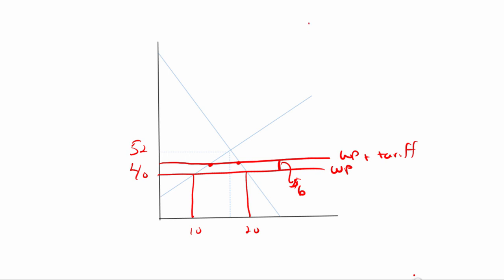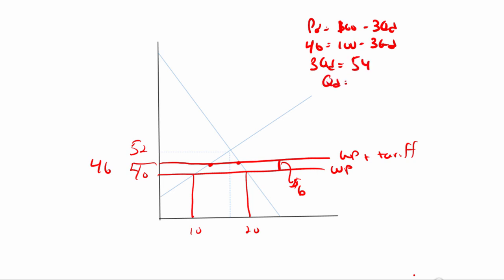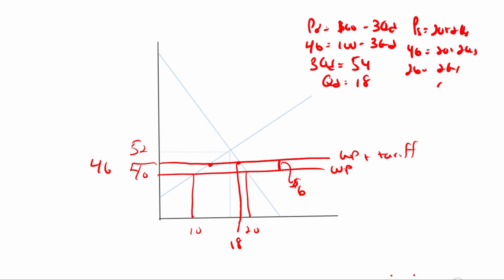Going to the demand equation: PD equals 100 minus 3QD, and the price is 40 plus 6, which equals 46. So 46 equals 100 minus 3QD, giving 3QD equals 54, so QD equals 18. Consumers have cut back their quantity demanded to 18 units. For the supply curve: 46 equals 20 plus 2QS, giving 26 equals 2QS, so QS equals 13.